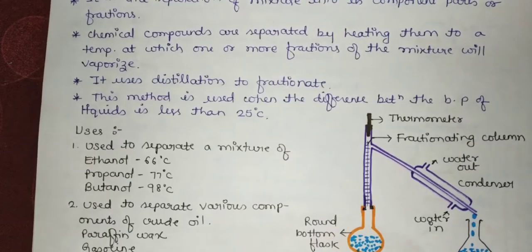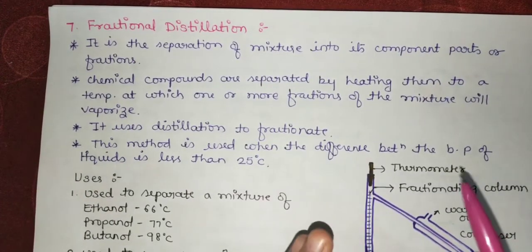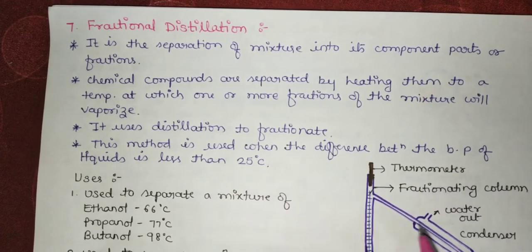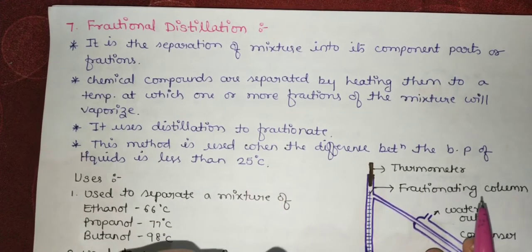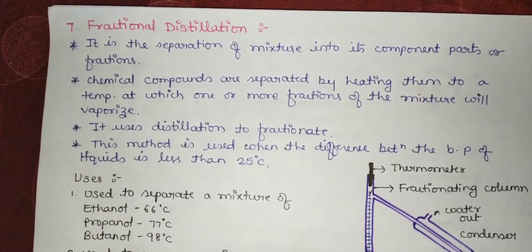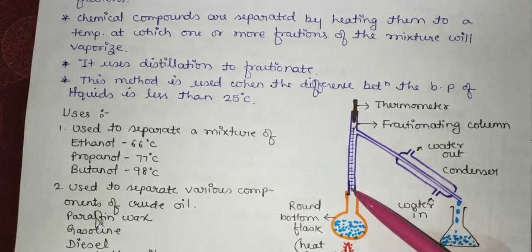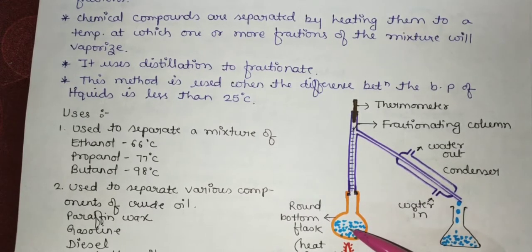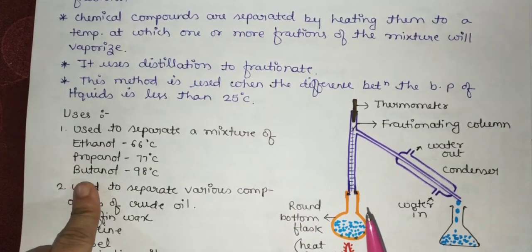Next is fractional distillation. This technique is used when two liquids have a boiling point difference of less than 25°C. The arrangement is similar to simple distillation, with the key difference being a fractionating column attached to the round-bottom flask.